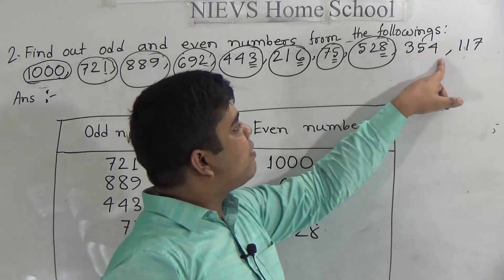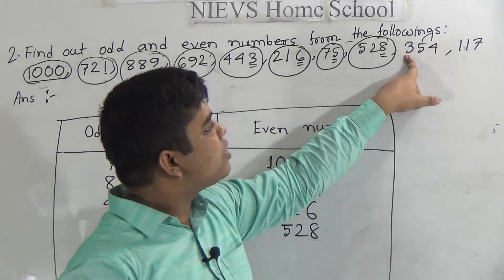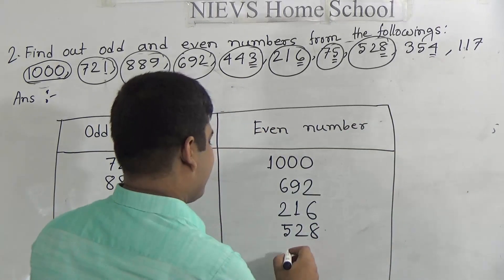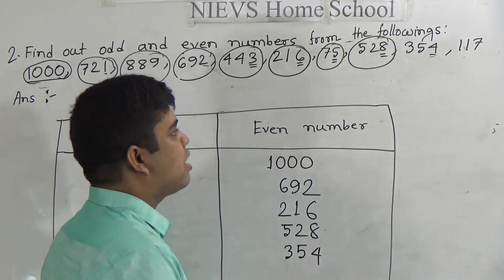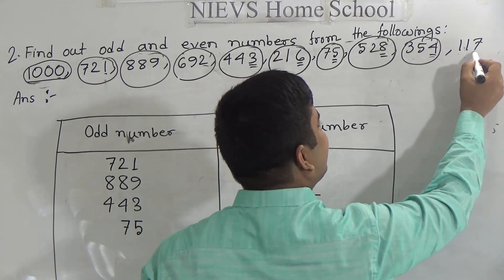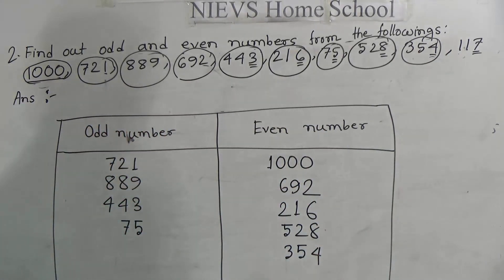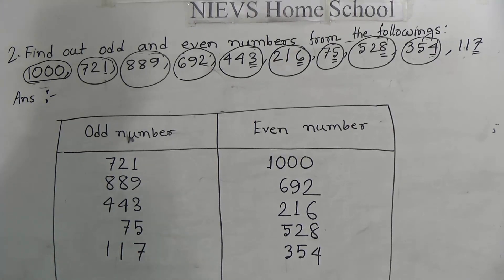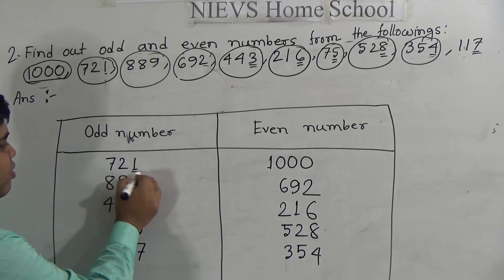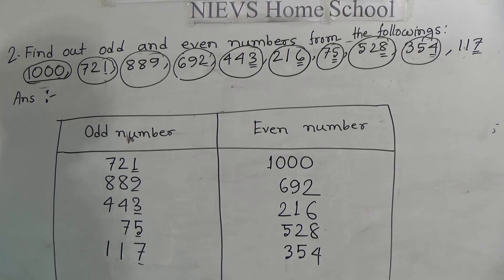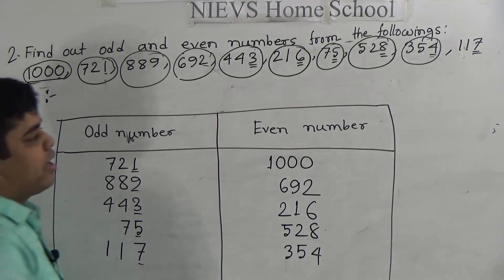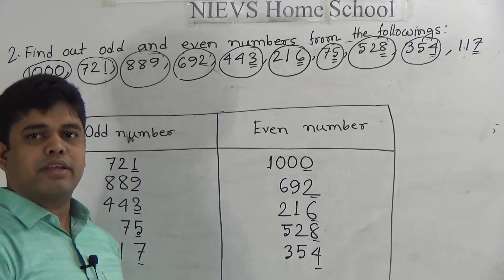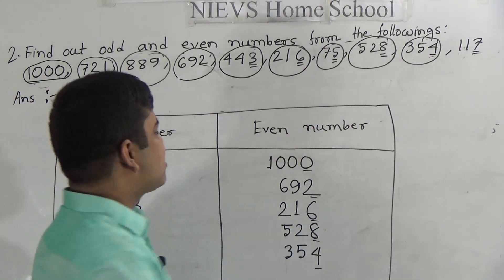Two numbers left: 354 and 117. From 354, the last digit is 4 which is even, so 354 is even. Write 354 in the even number box. 117 — last digit is 7, which is odd, so 117 is an odd number. Now we check our answer. The ones-place digits for odd numbers are 1, 9, 3, 5, 7 — all odd. The ones-place digits for even numbers are 0, 2, 6, 8, 4 — all even. So this column is also correct.